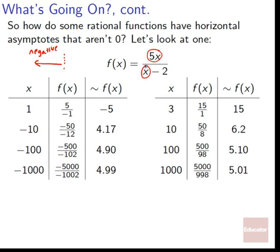As they go out, they wind up approaching the ratio of 5 to 1, so the function approaches 5. When we have very large numbers — like 1,000,000 — it becomes 5 times a really big number divided by a really big number, which cancels to 5. The factor of negative 2 in the denominator has less and less relative effect as the numbers get larger and larger, so we get closer and closer to 5.